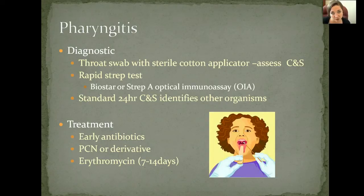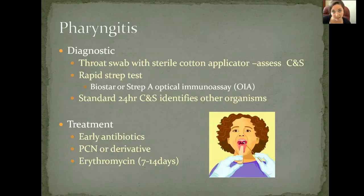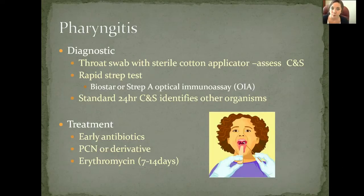One of the most common tests to determine if it is strep is a rapid strep test. One trade name for this is Biostar, and it's also called a strep A optical immunoassay, or strep A-OIA. This is a quick test that usually gives results within a couple of hours to determine if the patient really does have strep. A culture and sensitivity can take 24 hours to grow and will show specifically what microorganisms are present, giving us a clear indication of how to treat the patient.